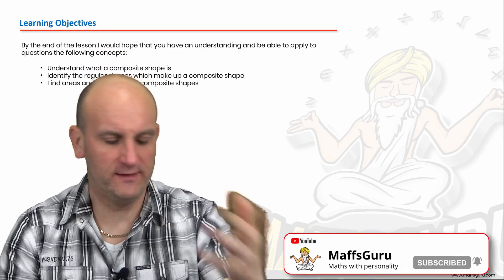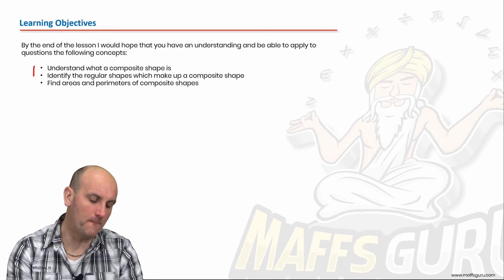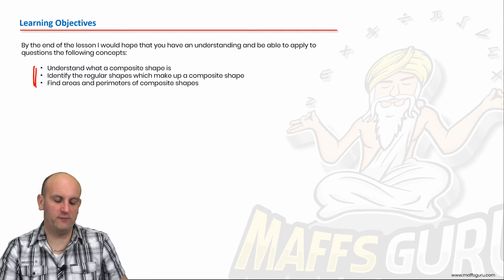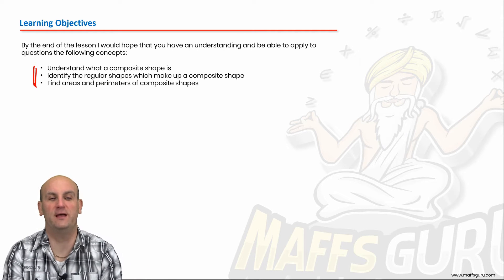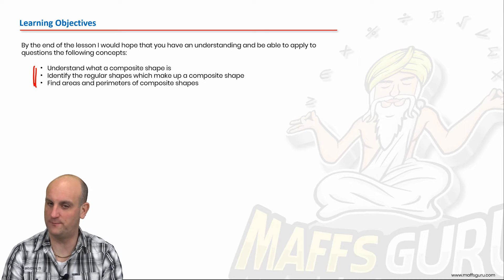So what are we doing in this lesson? Well, there are my learning objectives. We're going to understand what a composite shape is, identify regular shapes which make up those composite shapes, and then find areas and perimeters of said composite shapes.